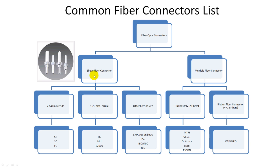Single fiber connectors can be categorized by the size of their ferrule — those are the ferrules. The most common ones are the 2.5 mm ferrule connector and the 1.25 mm ferrule connector. There are some other ferrule sizes available also, which are mostly legacy and obsolete.